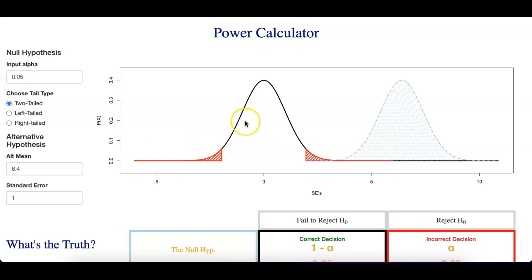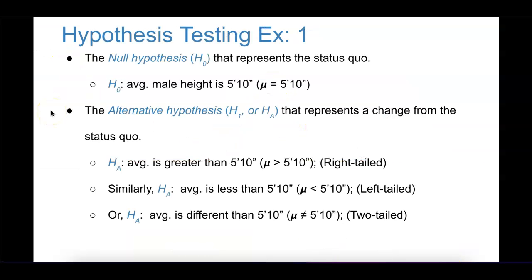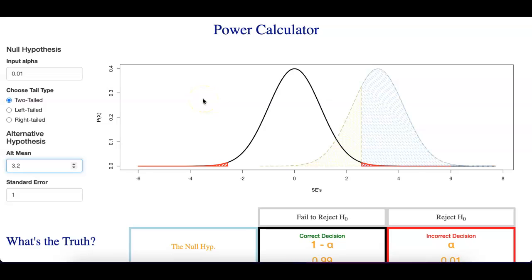Another typical percentage researchers use is 1%. Notice that the rejection region has gotten smaller, which means the researcher has made it more difficult to reject the null hypothesis — they have to find more extreme, more rare values in order to reject. Let's reason through a few examples, but before we do that, let me show you this widget and how it works so that as we go through the examples, you can know what to look for.